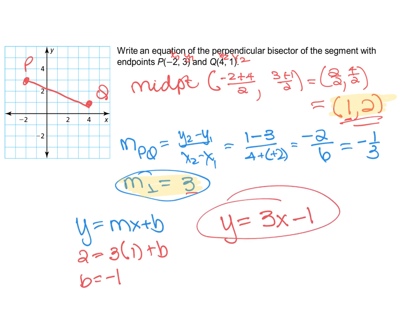If you graph that line, it should look like this — hopefully using a straight edge — and those two lines will be perpendicular.